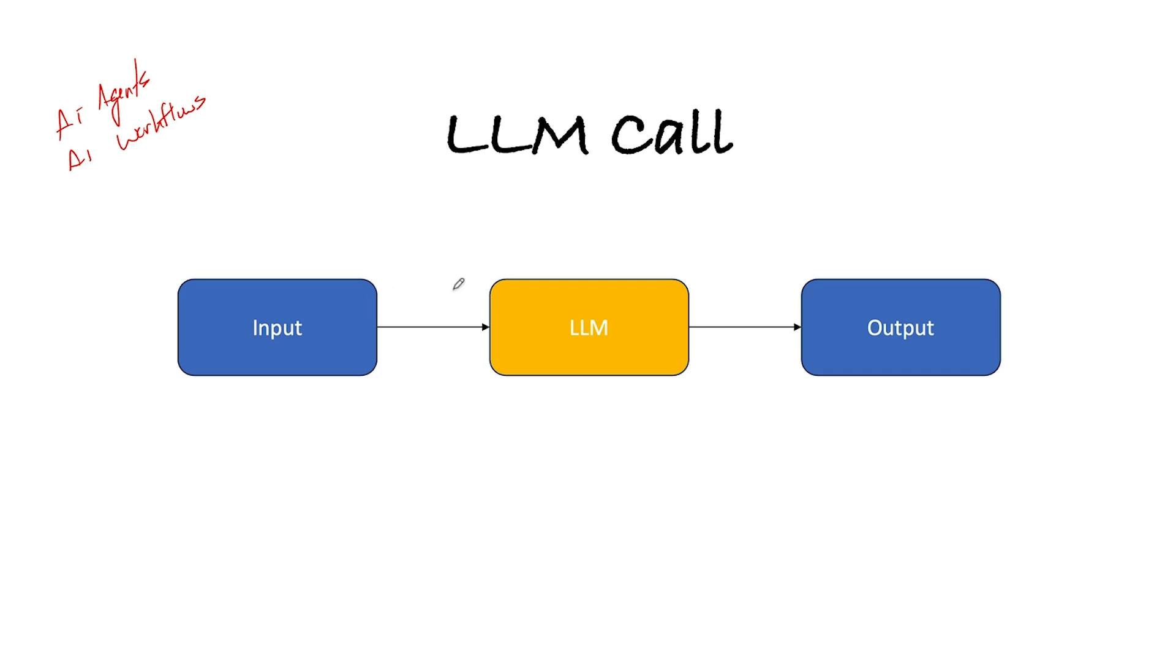We have a simple LLM call. LLM is a large language model - ChatGPT, you know by now. We've got the input. Let's say, write me something. You pass that to the LLM. It writes you something and spits out the output. Very straightforward. The LLM is the brain of both the agent and the workflow.